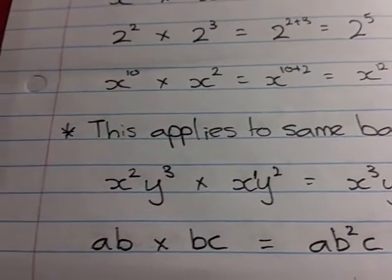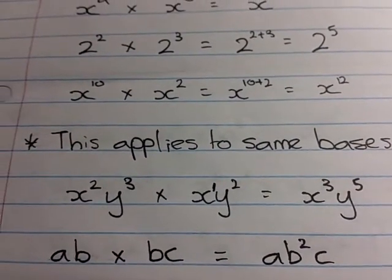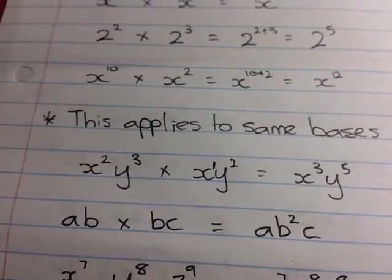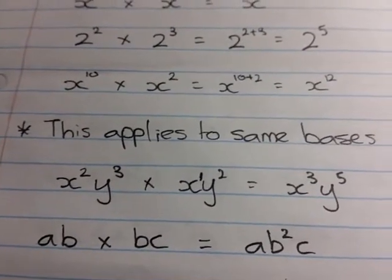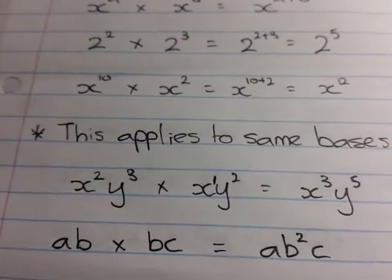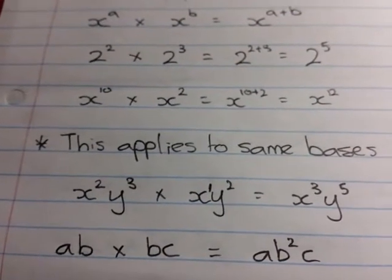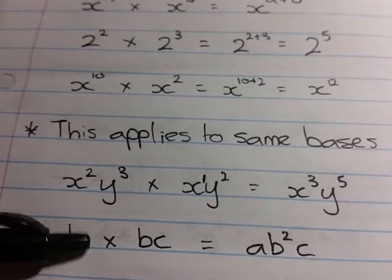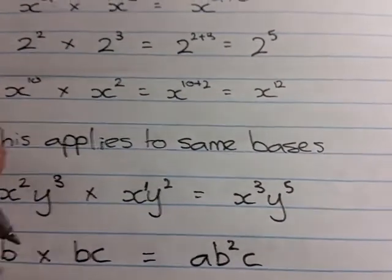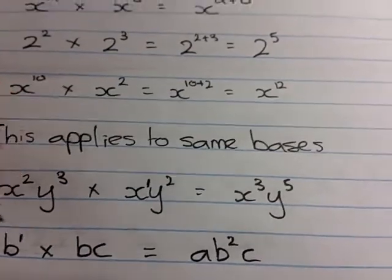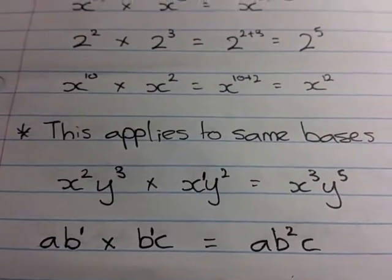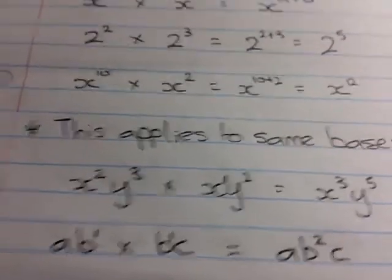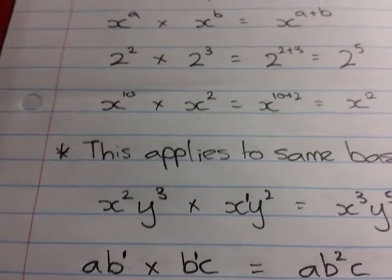Here I have ab times bc. The only things that each of those have in common are b's, so we can actually apply this law to the b's. As for the a and the c, because there is nothing that multiplies with either of them, they just follow through. So the a just remains a. The b to the 1 times b to the 1 gives you b to the 2. And then the c, because there's no other c's over there, it just follows through.